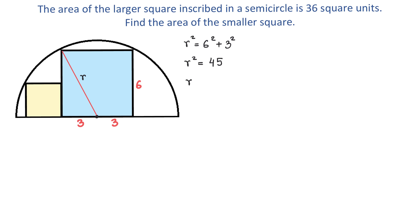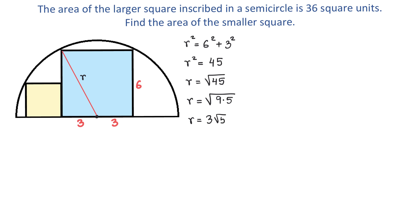To find r we will take the square root of 45. To simplify square root of 45 we will write 45 as a product of 9 and 5. Then square root of 9 is 3, so r equals 3 square root of 5.